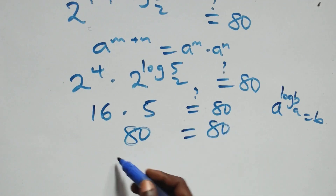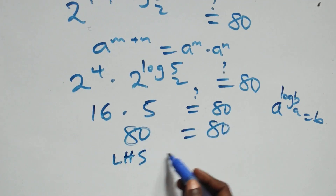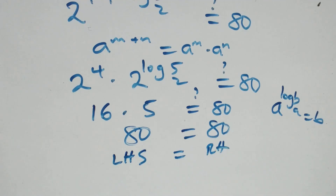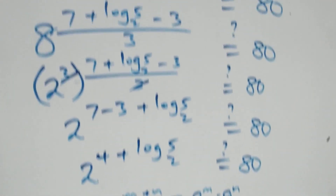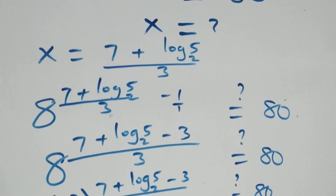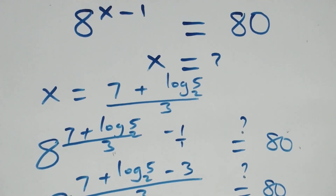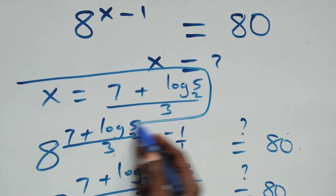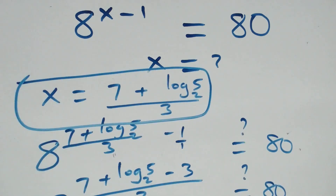Since the left-hand side equals the right-hand side, we conclude that x equals (7 + log₂5) / 3 satisfies the given problem. Thank you for watching. Don't forget to subscribe for more videos, turn the notification bell on, share this video, and post your comments. See you next class!